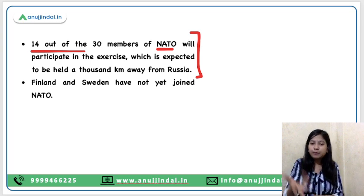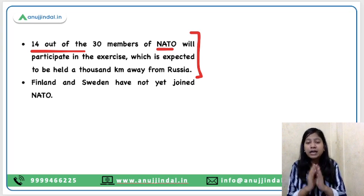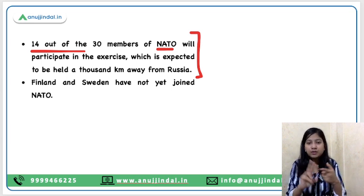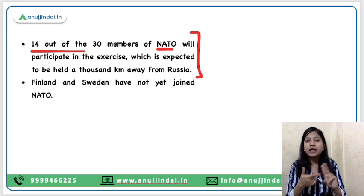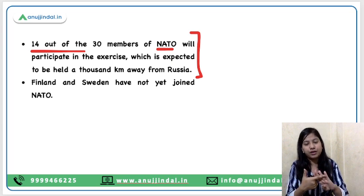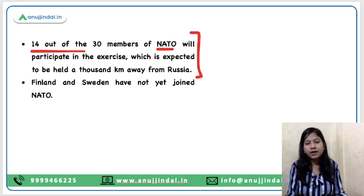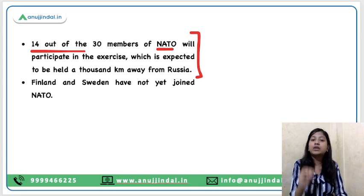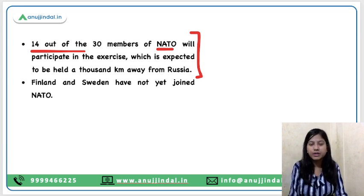On that note, there are nine countries in the world which have nuclear warhead capability: the US, Russia, the UK, France, India, Pakistan, China, Israel, and North Korea. These are the nine countries which have nuclear weapon capabilities — do remember this point.